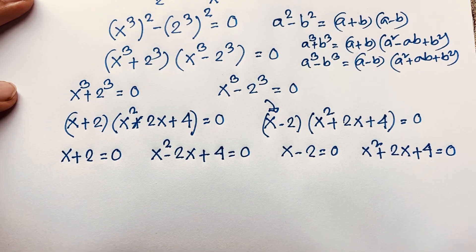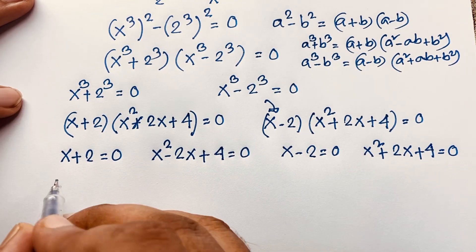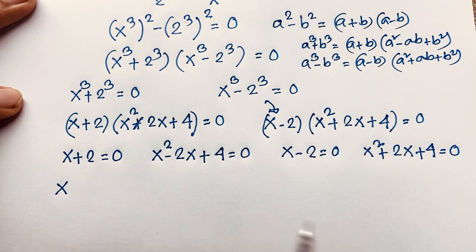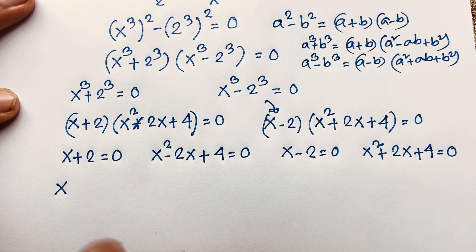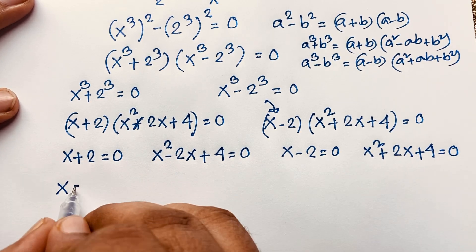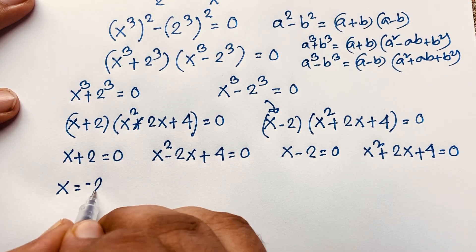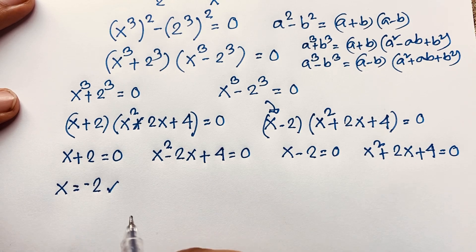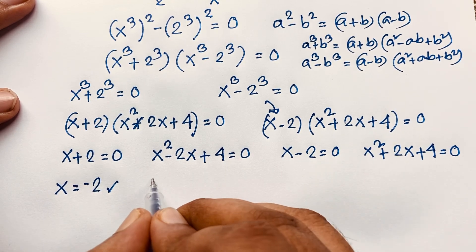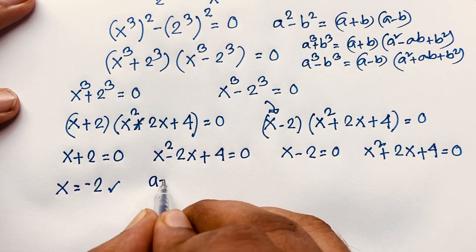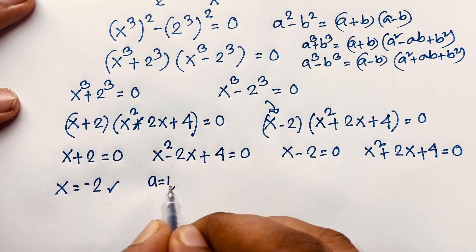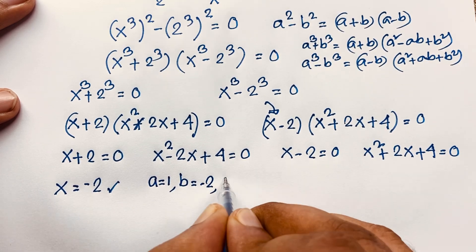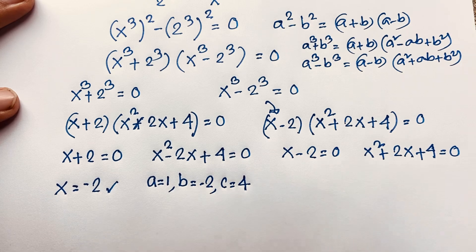From x + 2 = 0, moving the 2 to the other side gives x = −2. This is our real solution. Now for the quadratic x² − 2x + 4 = 0, we identify a = 1, b = −2, and c = 4.